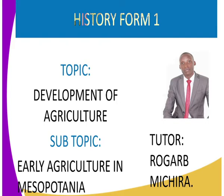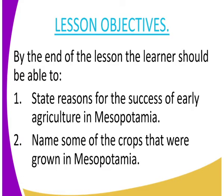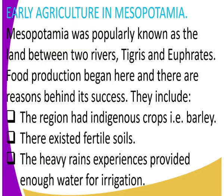In crops we had wheat, millet, sorghum, barley, rice, and maize. In today's class we'll look at early agriculture in Mesopotamia. By the end of the lesson, I expect you to be able to give some of the factors that facilitated early agriculture in Mesopotamia, and also name some of the crops that were grown there.